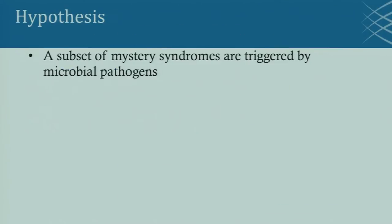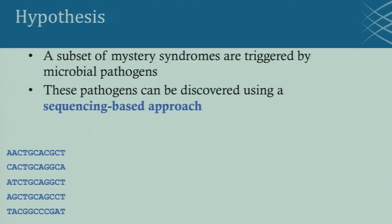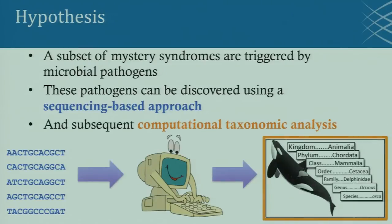My hypothesis was that a subset of mystery syndromes in this post-transplantation setting are triggered by microbial pathogens. This didn't seem crazy — patients without a competent immune system might get strange infections. Furthermore, I thought maybe we can use sequencing-based approaches, where we sequence the DNA to discover these pathogens, and then analyze them using computer-based programs that assign a taxonomy — a designation of what type of bacteria, virus, fungus, or other organism a sequence might belong to.